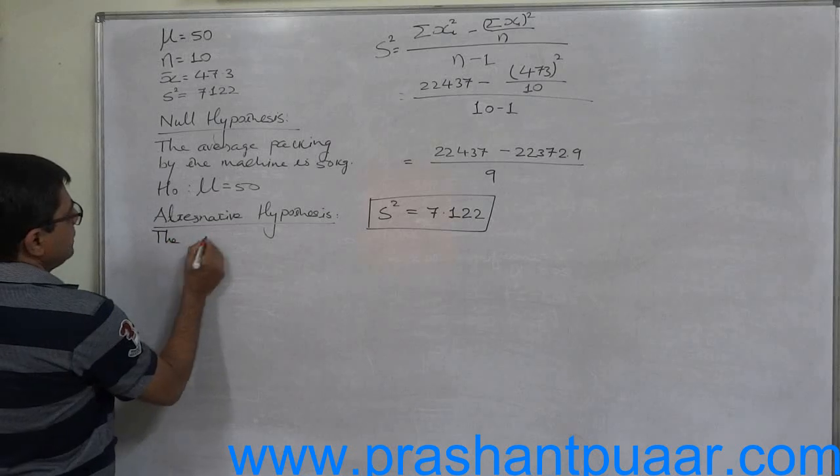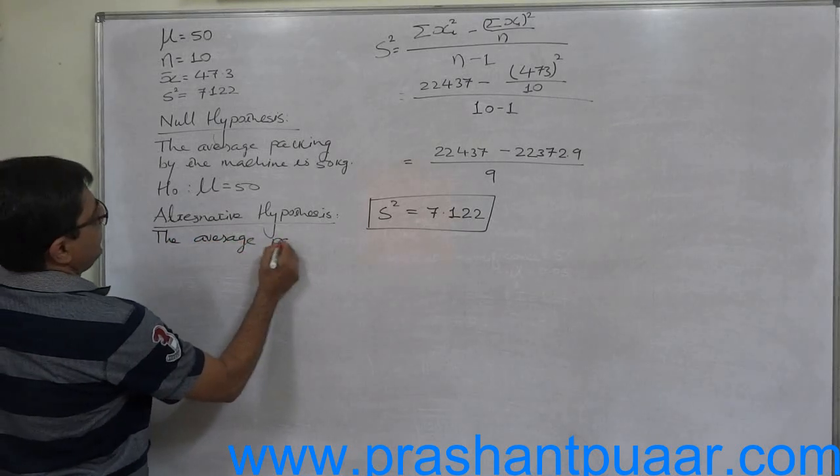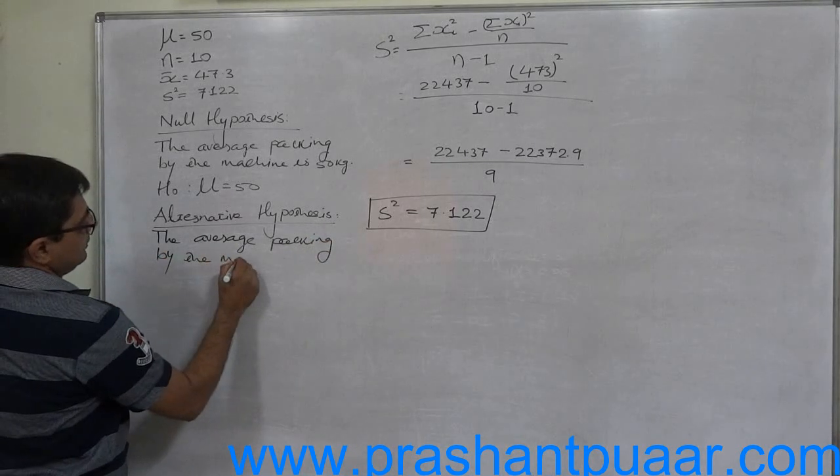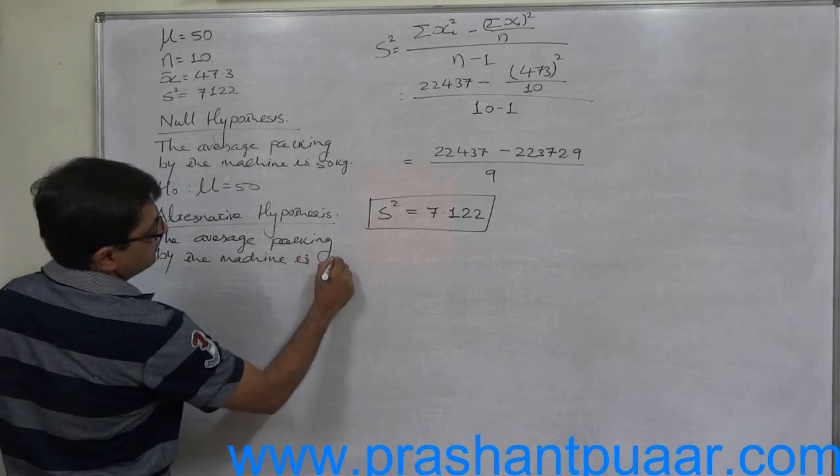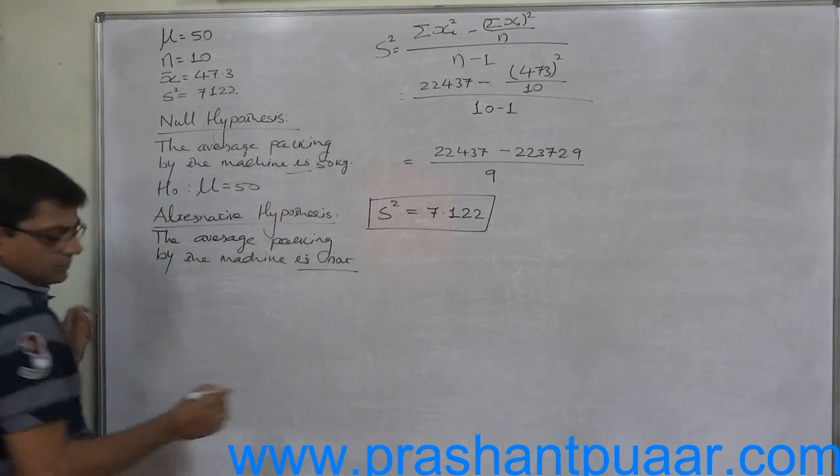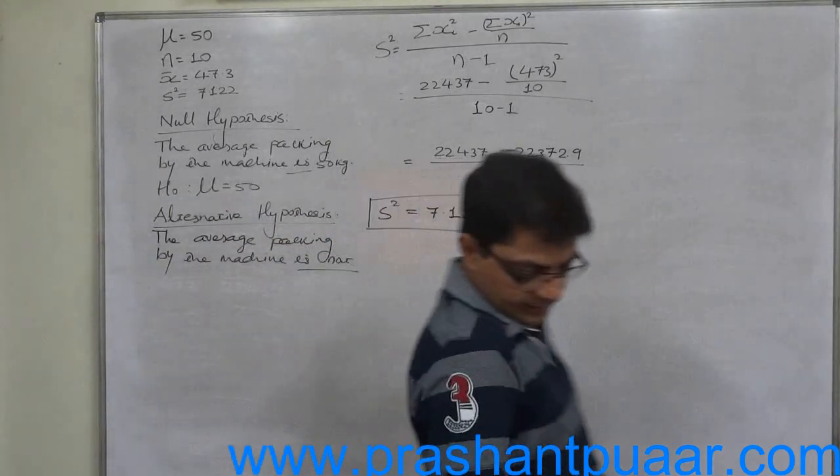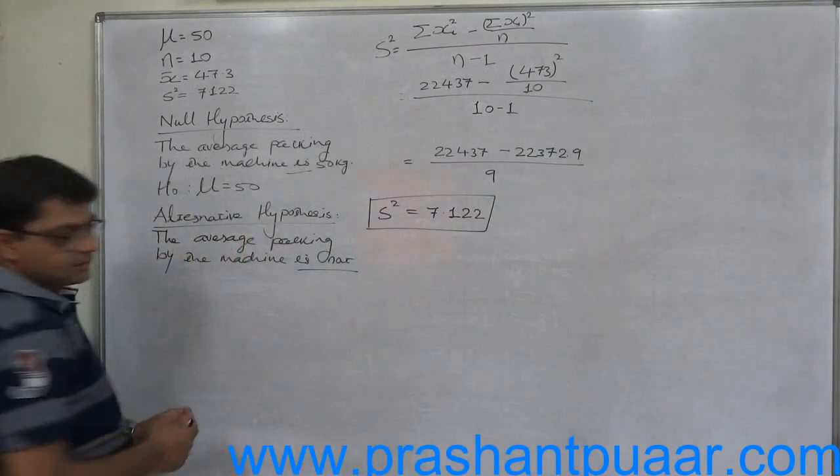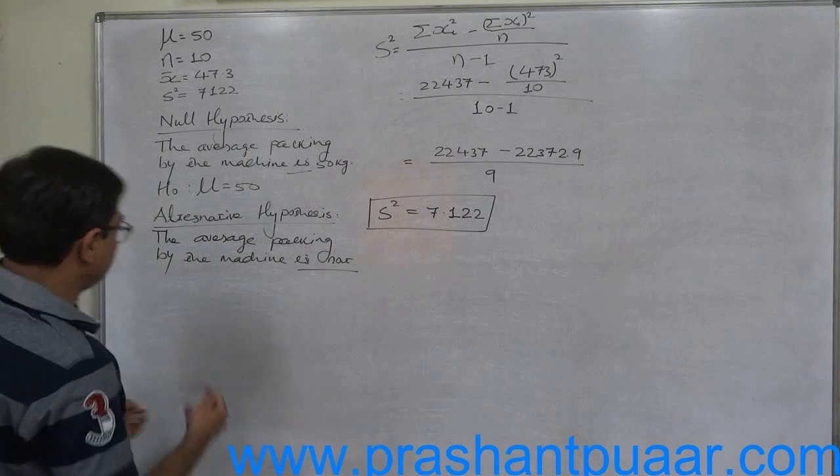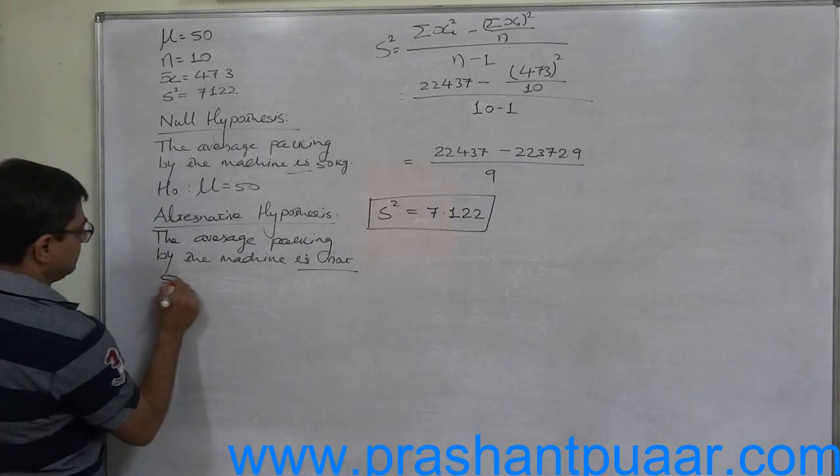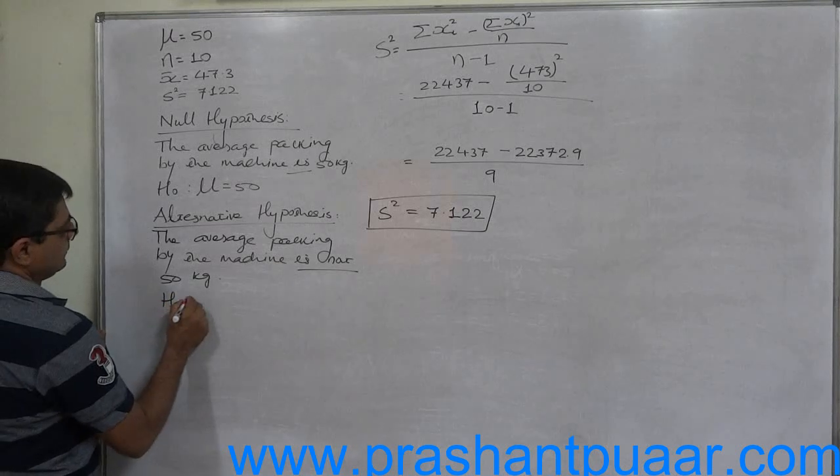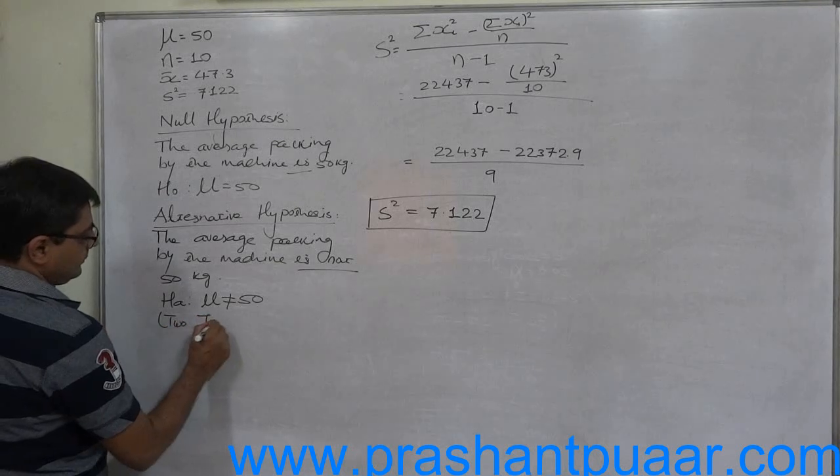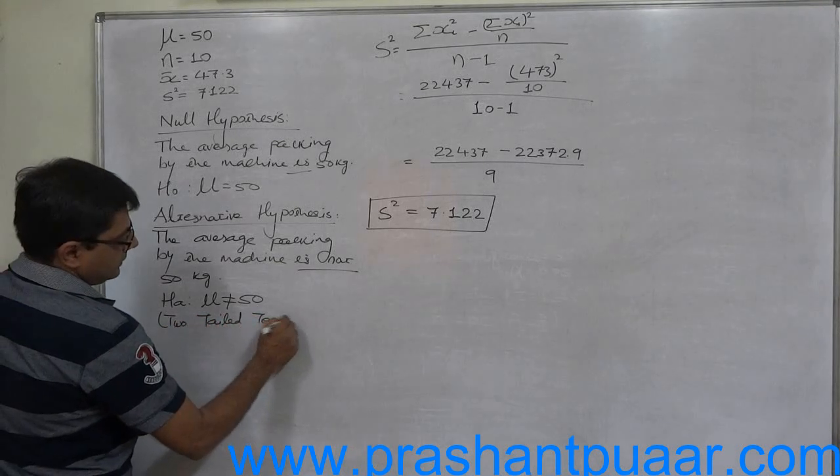The average packing by the machine is not equal to 50 because the paper setter is not clear about the direction of the hypothesis. That means this cannot be taken as a one-tailed test. This is a two-tailed test.